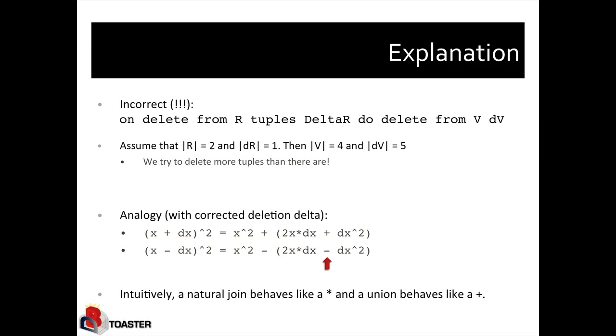However, suppose we actually took this query and tried to delete, that means subtract the multiplicities of dv from v, we would have negatively many tuples, which of course is not correct. After deleting one copy of the tuple from two copies, we should then still have one copy. So dv should actually remove three copies, not five copies.